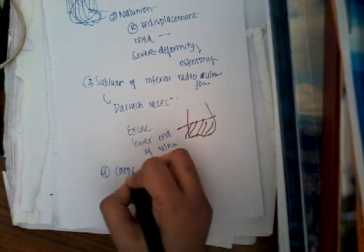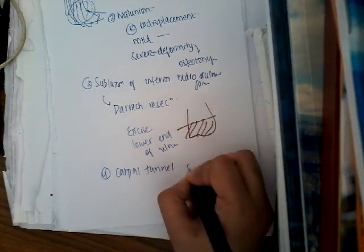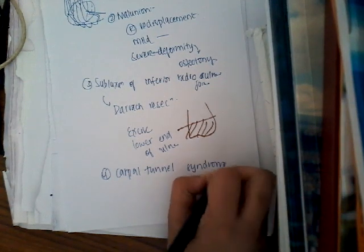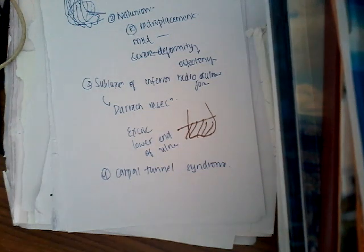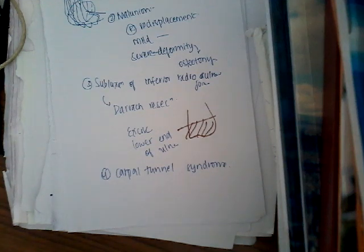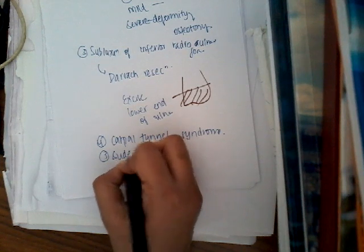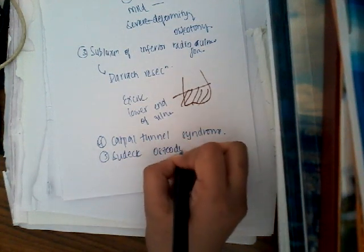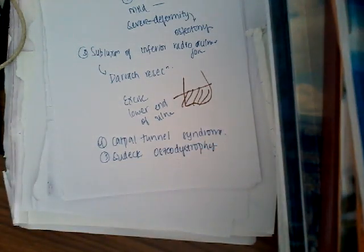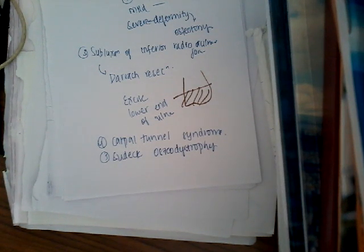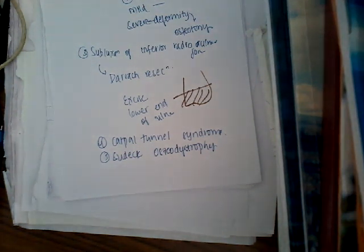The fourth complication is carpal tunnel syndrome, where after the fracture unites, the fracture can compress the median nerve - you will have to relieve the compression. The fifth complication is Sudeck's osteodystrophy, which can occur once the plaster is removed, presenting with pain, swelling, and stiffness of the hand - treated with physiotherapy. These are the different complications of Colles fracture.